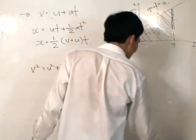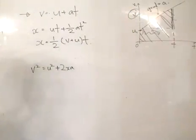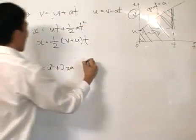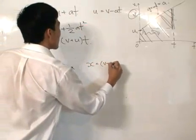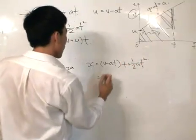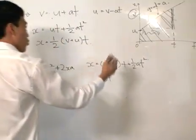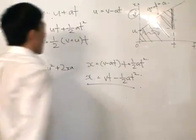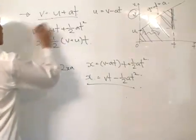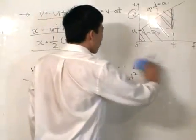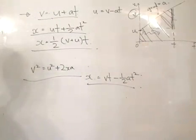Last but not least, we eliminate u. From v = u + at, we get u = v − at. Substituting into x = ut + ½at²: x = (v − at)t + ½at² = vt − ½at². So our fifth equation is: x = vt − ½at². That gives us five equations to help solve problems involving motion under constant acceleration.